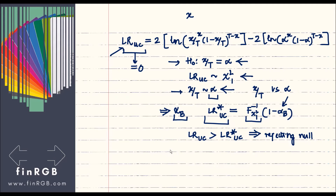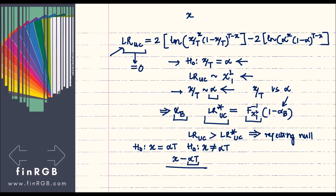This raises the question: do the results of this technique match the standard hypothesis test? In that test, the null is x equals alpha times t, alternate is x not equal to alpha times t — a two-tailed test. The test statistic is z = (x_observed minus alpha·t) divided by the standard deviation, which is sqrt(alpha · (1 - alpha) · t). We assume this is approximately standard normal and use it to find critical values.